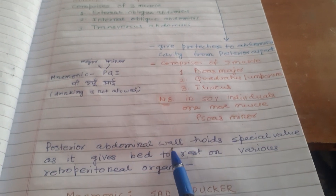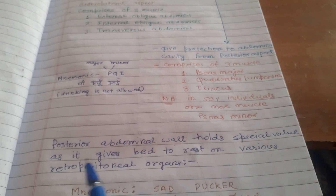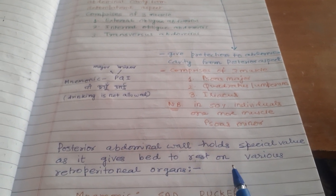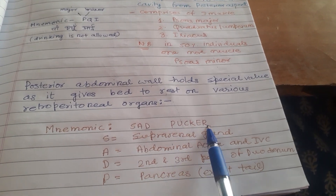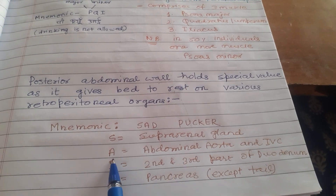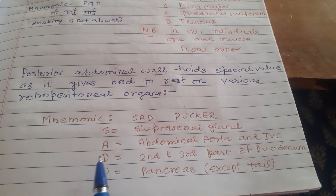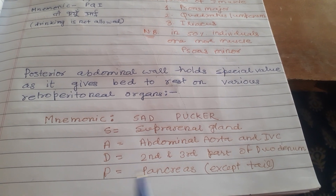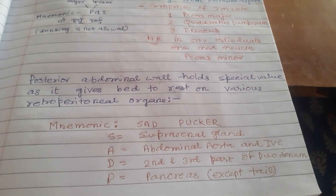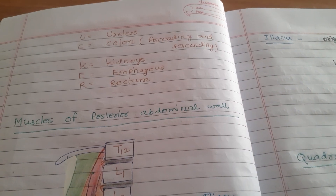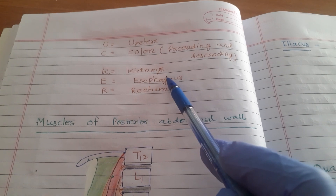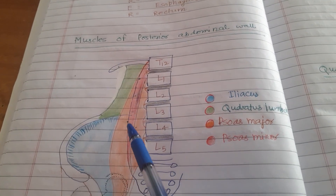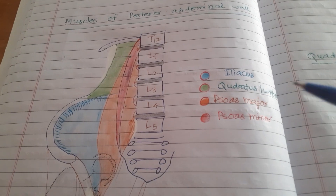The posterior abdominal wall holds special value as it gives a bed to various retroperitoneal organs. The mnemonic for retroperitoneal organs is SAD PUCKER: S for suprarenal gland, A for abdominal aorta and inferior vena cava, D for second and third part of the duodenum, P for pancreas, U for ureter, C for colon (ascending and descending), K for kidneys, E for esophagus, R for rectum.